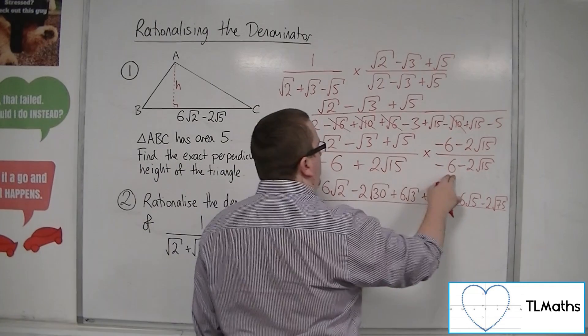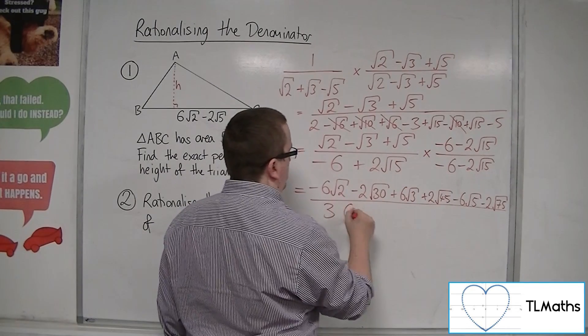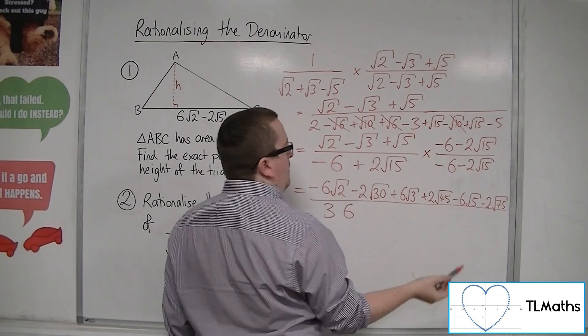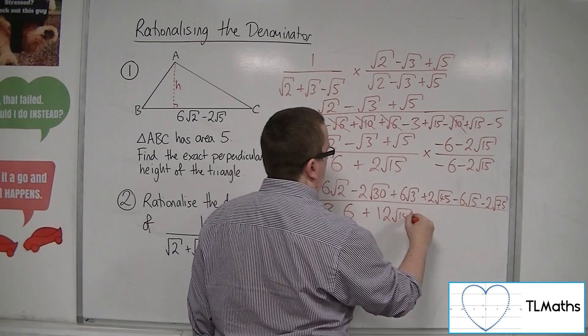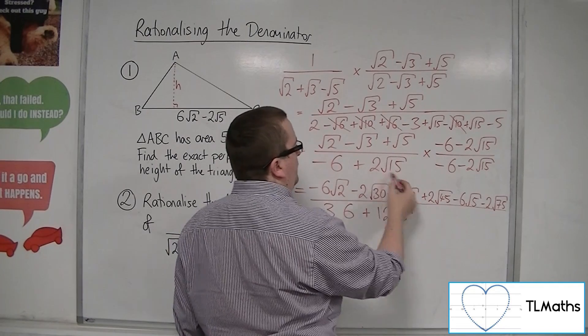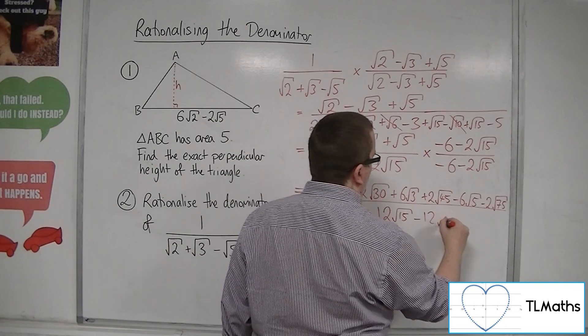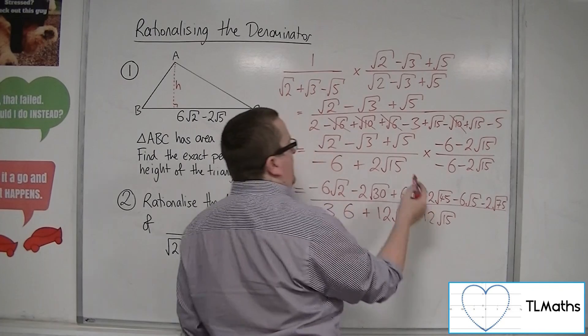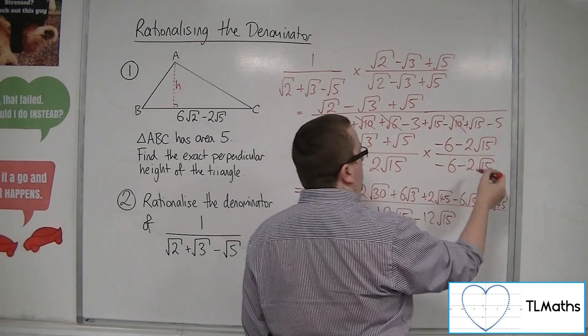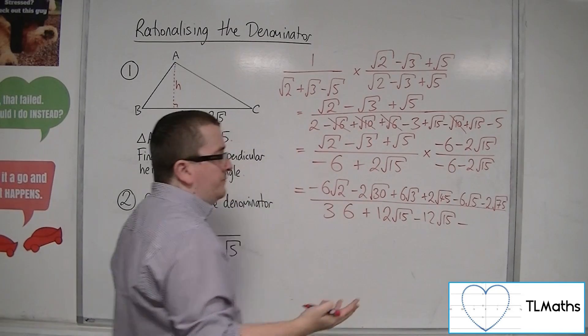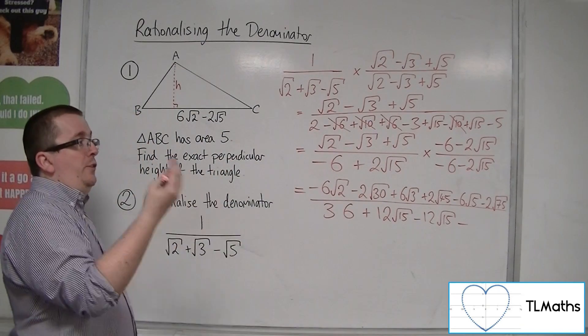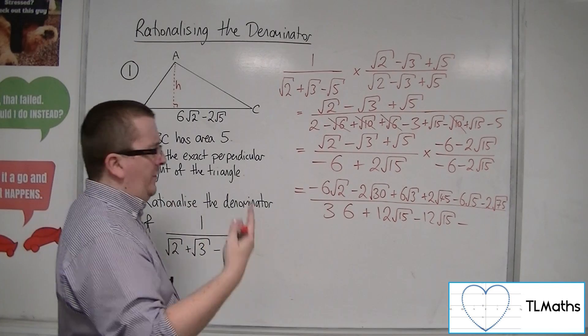Minus 6 times minus 6, so 36. We're going to get minus 6 times minus 2 root 15, so plus 12 root 15. And we're going to get 2 root 15 times minus 6, so minus 12 root 15. And then 2 root 15 times minus 2 root 15. 2 times 2 is 4. Root 15 times root 15 is 15. 4 times 15 is 60.